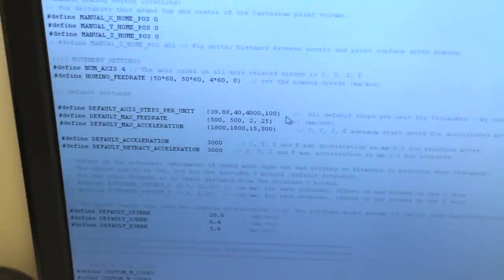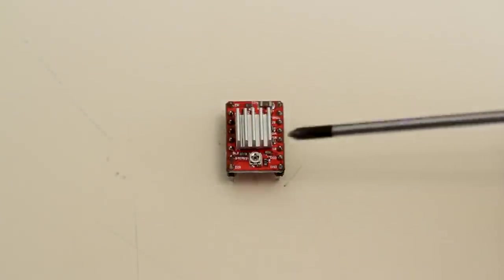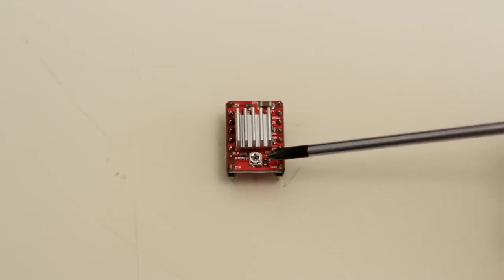In the Marlin firmware, we need to update the number of steps to send to the extruder stepper motor. Change the number of e-steps to 100. That assumes you have your stepper motor driver at 16 microsteps. Set the stepper driver trim pot to three quarters. So rotate the trim pot until it's facing in this direction here.